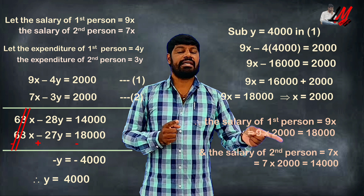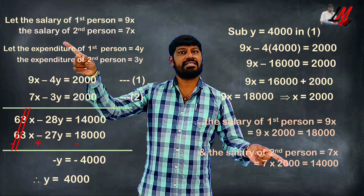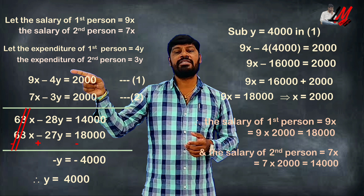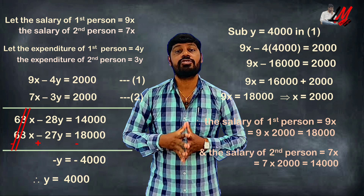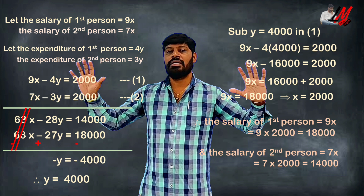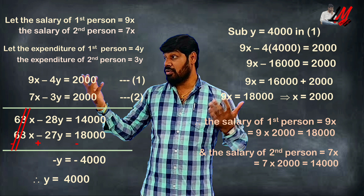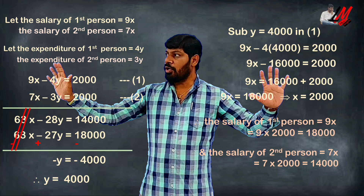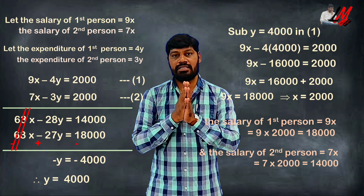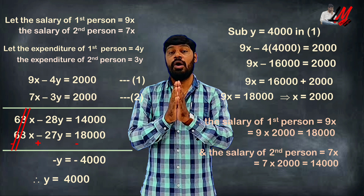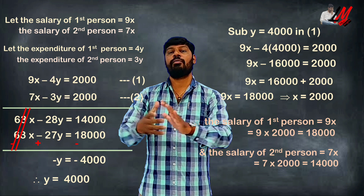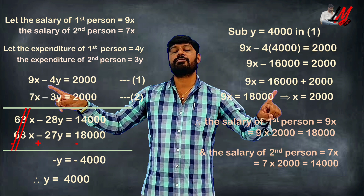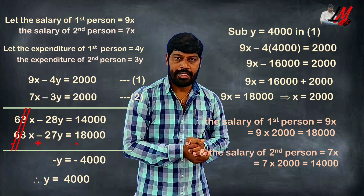Let's verify: the salary of the first person is 18,000 and expenditure is 16,000, so the difference — the savings — is 2,000. The second person's salary is 14,000 and expenditure is 12,000, so the difference is also 2,000. Our children will be able to extract real-life situations, solve them, and give the final answer. I hope this is a clear and important first problem in the exercise. See you in the next video — take care, bye-bye.